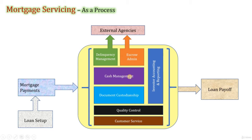First, let's learn about cash management. Cash management basically consists of collecting the borrower's mortgage payments and depositing those funds into various custodial accounts. The mortgage payment consists of the principal, interest, taxes, and insurance, which is also called PITI. The principal and the interest portion of each payment is separated from the insurance and taxes. The principal and interest has to be remitted to the investors, and the insurance and taxes have to be paid out to respective third parties through the escrow accounts.